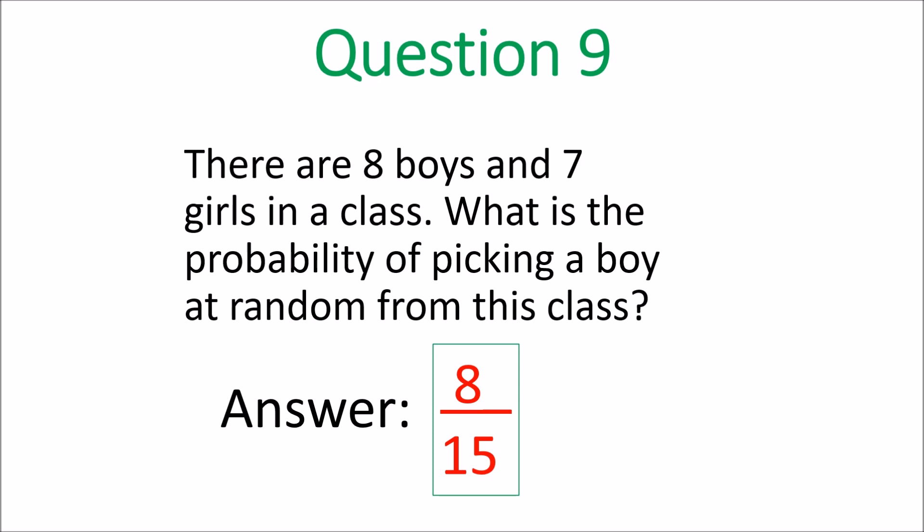Question nine: there are eight boys and seven girls in the class. What is the probability of picking a boy at random? Eight boys — and the total students in the class is eight plus seven, which is fifteen. So the probability, written as a fraction, is eight fifteenths. The number of boys over the total number of students.